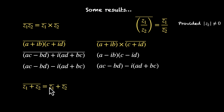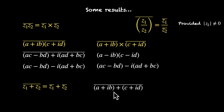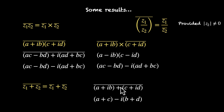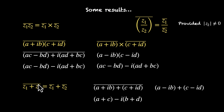For conjugates we also have addition: (z1 + z2)-bar = z1-bar + z2-bar. Adding z1 = a + ib and z2 = c + id gives (a + c) + i(b + d). Taking the conjugate negates the imaginary part: (a + c) − i(b + d). Rearranging gives (a − ib) + (c − id), which is z1-bar + z2-bar. What works for addition also works for subtraction.